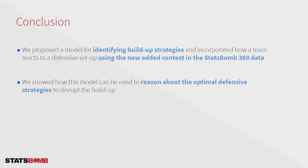In summary, these analyses can tell us — for Barcelona, for example — that they're most likely to go through the center, that forcing them to either side won't make a big difference, but that blocking players on the center back's right side and using a high block might. You can create these analyses and summaries for any team. We proposed a model for identifying buildup strategies, incorporated how a team reacts to a defensive setup using StatsBomb 360 data, and showed how this model can be used to reason about optimal defensive strategies to disrupt teams' buildups.